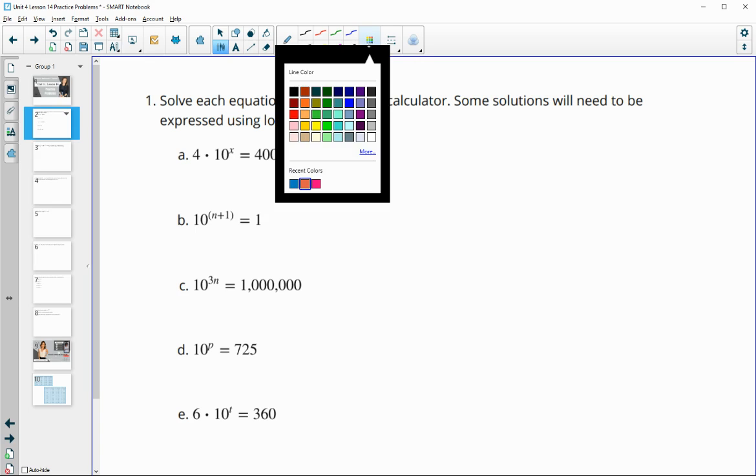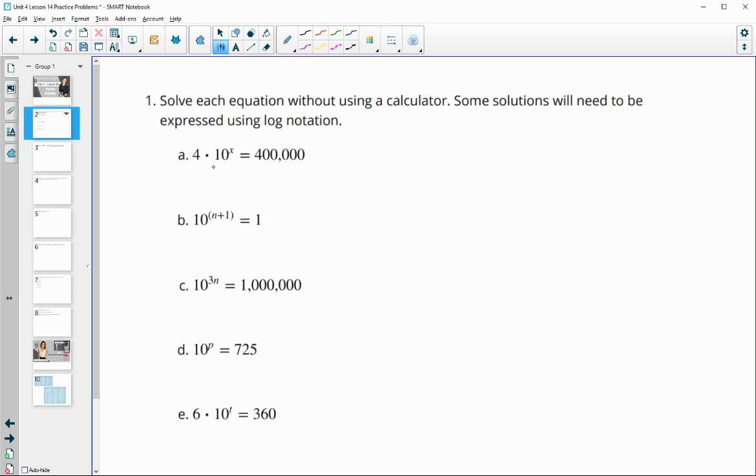So for this first one, we isolate 10 to the x by dividing by 4. So 10 to the x equals 100,000. We know that 100,000 is 10 to the 5th power, so 10 to the x equals 10 to the 5th, which means x must equal 5.